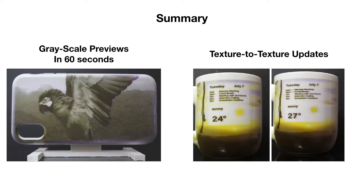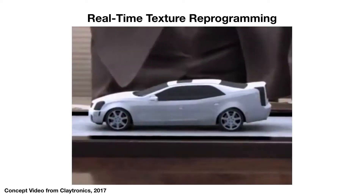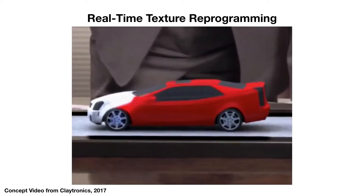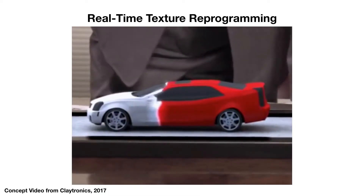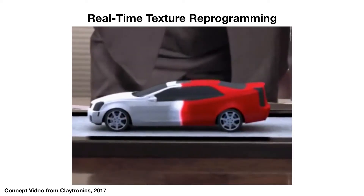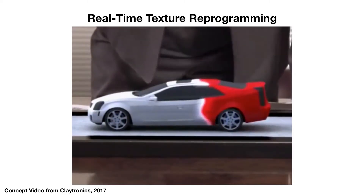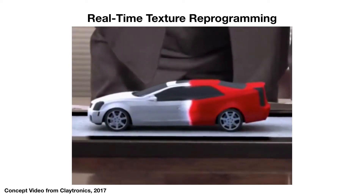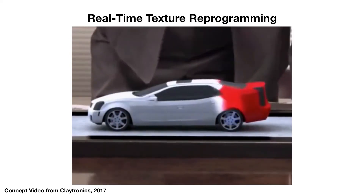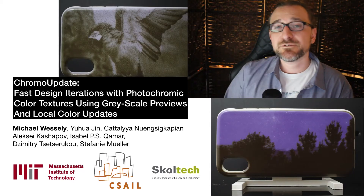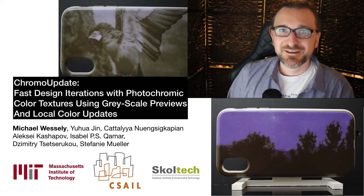In summary, I presented grayscale previews that can reprogram the appearance of an object in 60 seconds, and direct texture-to-texture updates. Looking at next steps, while the system is already much faster than previous work, it is not instant. Our future research vision — illustrated here with a reference to Claytronics — is to move from fast updating to real-time texture reprogramming, where changes in an object's appearance are as instant as changing a texture in the digital world. Thank you very much, and I'm happy to answer questions.